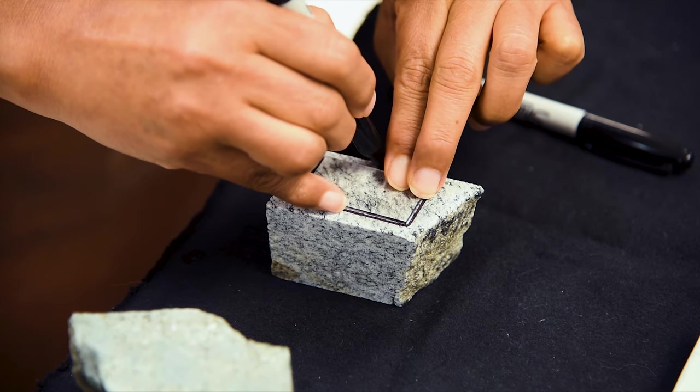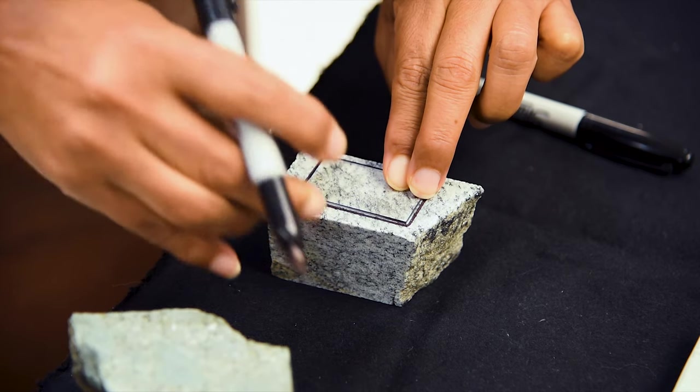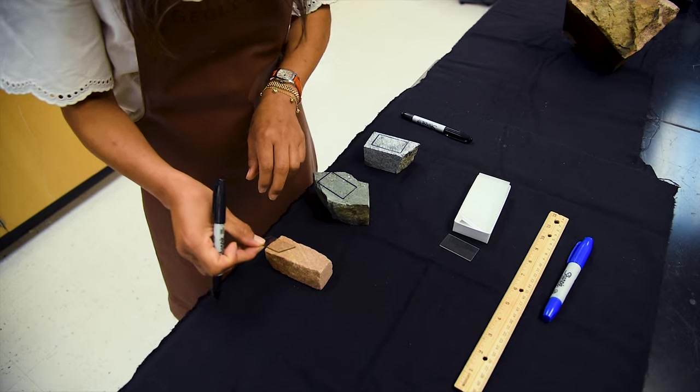Using a ruler or a glass slide as a template, Sarah is going to measure off an approximately one by two inch area with the sharpie to give her some guidance while further trimming her sample.